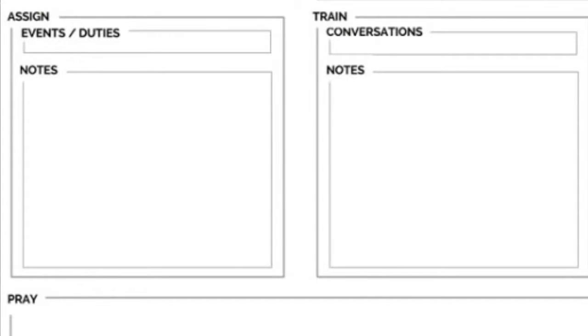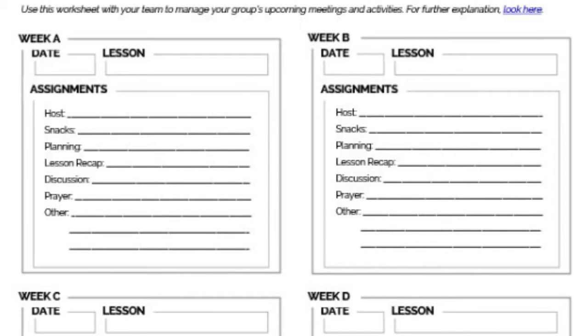The next step in your team meeting is to make assignments — you'll see a box called Assign. In this part of the meeting, you decide who needs to actually do what in order to achieve the plans you've just made. Who's going to lead which elements of the upcoming small group meeting, or any events you've decided to have? This is where the Group Schedule Planner comes into play. Who's going to make phone calls? Who's going to have mentoring conversations?